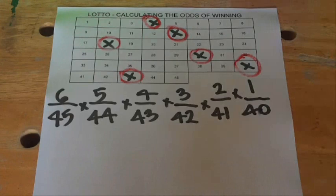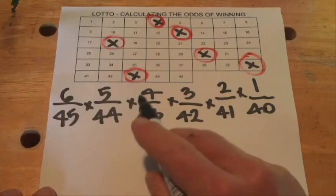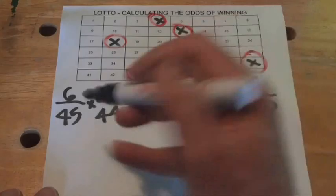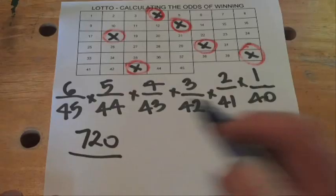As we're going along, I've put multiplication signs between each of those fractions. So now we multiply: 6 times 5 times 4 times 3 times 2 times 1, which gives us 720.